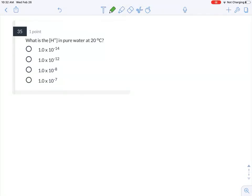Okay, what is the H+ in pure water at 20 degrees Celsius? There are three different ways to do this. You could just memorize that in pure water, H+ is equal to 10 to the minus 7.